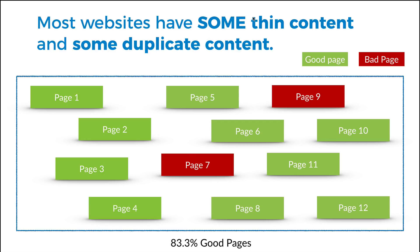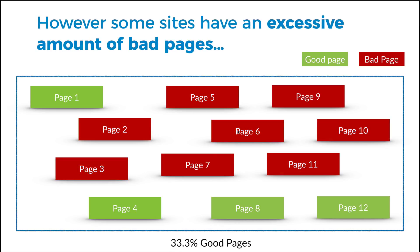Conversely, most websites have a bit of thin content and some duplicate content — it's almost unavoidable. Let's say you have 83.3% good pages: Google is going to look at your website and say, 'Yeah, it's pretty good, we could still send them a bunch of traffic.' That's not a big deal.